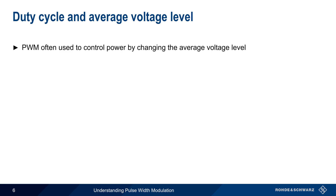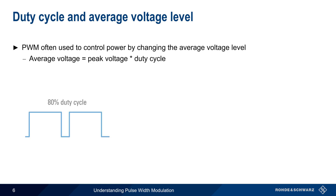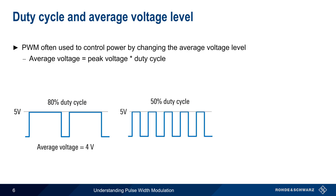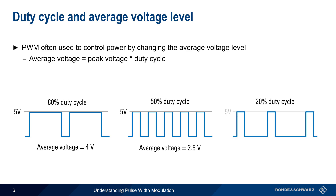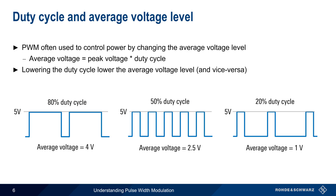Pulse width modulation is often used to control power by changing the average voltage level seen at the load. The average voltage is simply the peak voltage times the duty cycle. For example, if we have an 80% duty cycle and a peak voltage of 5 volts, the average voltage will be 5 times 0.8, or 4 volts. A 50% duty cycle would yield an average voltage of 2.5 volts, and decreasing the duty cycle to only 20% would decrease the average voltage to only 1 volt. As can be seen here, lowering the duty cycle lowers the average voltage and vice versa.